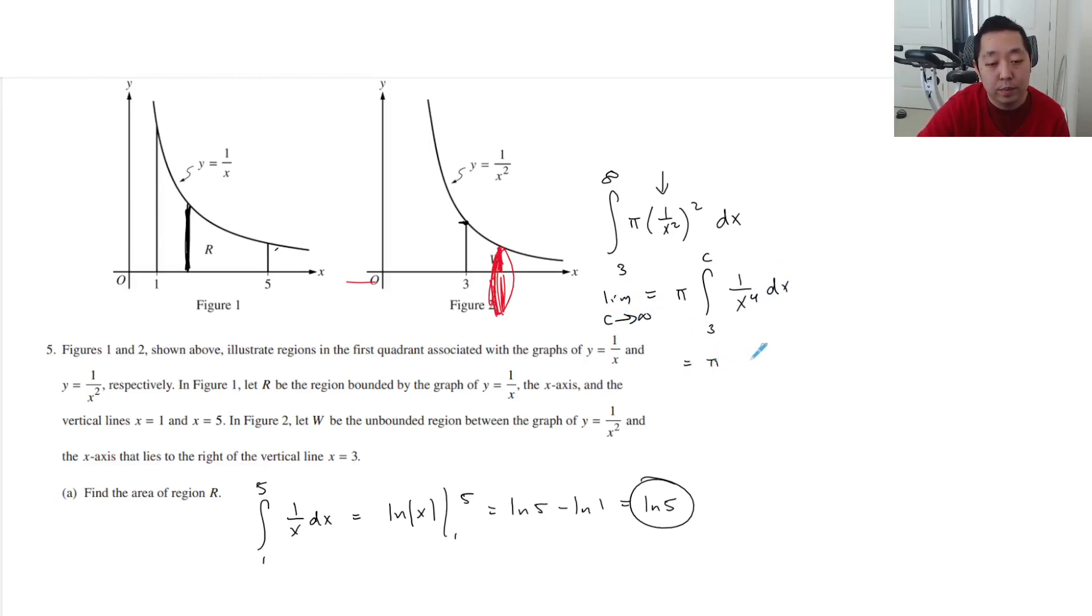This is π times the antiderivative. Since it's x^(-4), it becomes x^(-3) over -3 from 3 to c. That's -π/3 times (1/c³ - 1/27). Taking the limit as c goes to infinity, the 1/c³ term goes to 0, leaving π/3 times 1/27, which is π/81. The negatives cancel to make it positive.